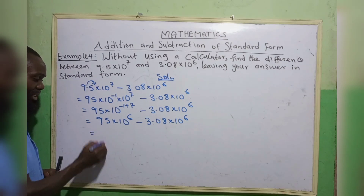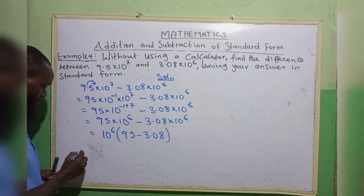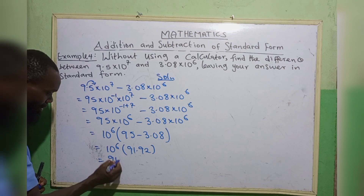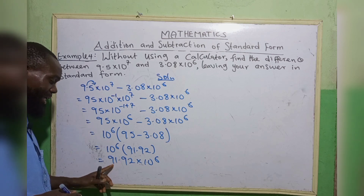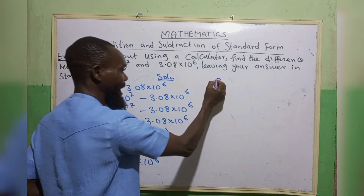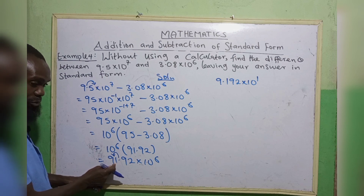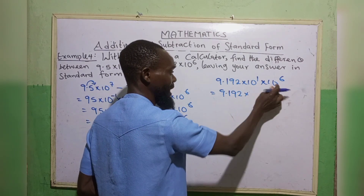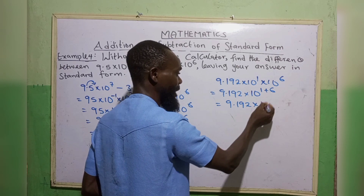Now 10 to the power 6 is common in both — we take it out: 10 to the power 6, bracket 95 minus 3.08, which gives 91.92. So we have 91.92 times 10 to the power 6. But the decimal point must be at the back of the first digit number, so we move it forward once — that is positive — giving 9.192 times 10 to the power 1, times 10 to the power 6, which is 9.192 times 10 to the power 7.